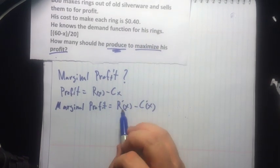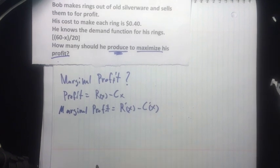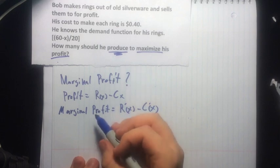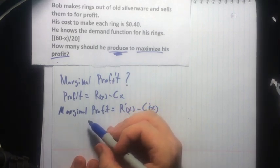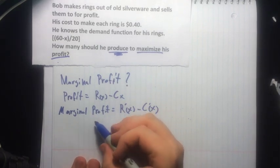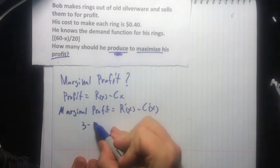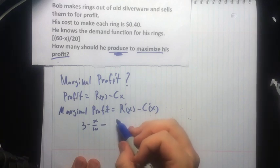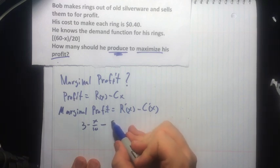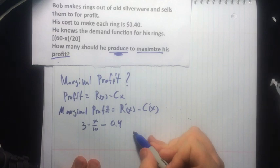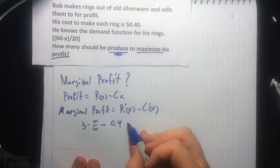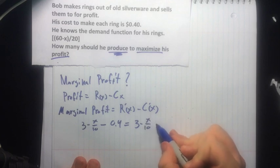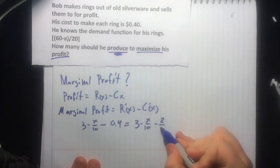So for our marginal profit, we can set this R'(x) minus C'(x), which we've already defined as 3 - x/10 minus 0.4. Let's write that in fractions: minus 2/5.